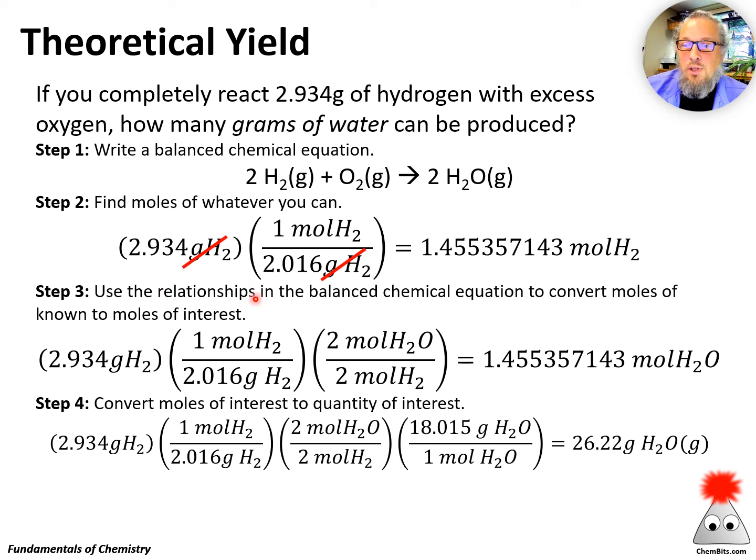Step three, use the relationships in the balanced chemical equation to convert moles of known to moles of interest. I'm just going to keep adding to this. So these first two terms are just what we had up here. Now we've got to use our mole to mole ratio of water to hydrogen to give us a result. And again, make sure your units are canceling correctly so that all these fractions are in the right order and not flipped over.